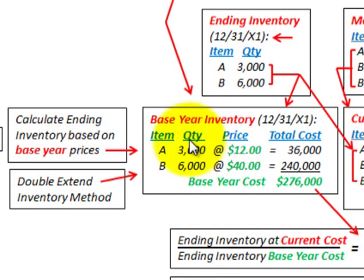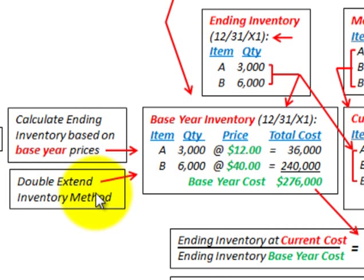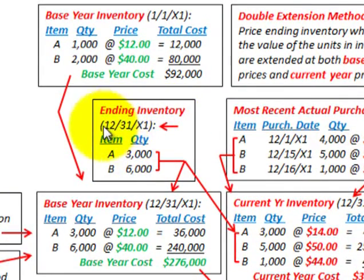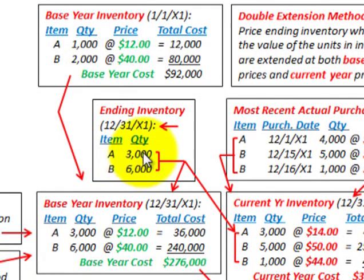Let's start by calculating the ending inventory based on the base year prices, using the double extended inventory method. We have ending inventory on 12/31/X1. We have Item A with 3,000 units in ending inventory, and for Item B we have 6,000 units in ending inventory.